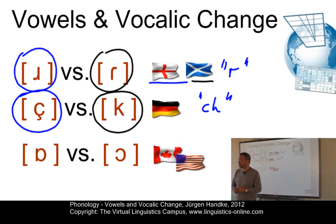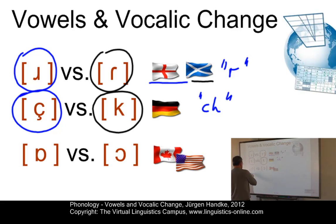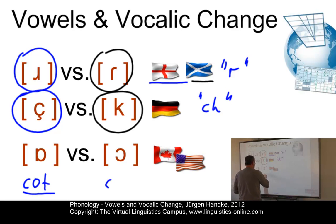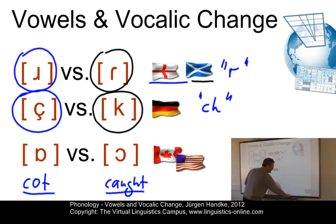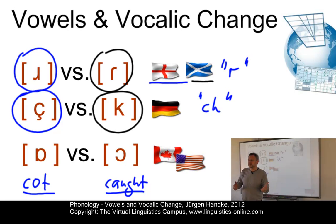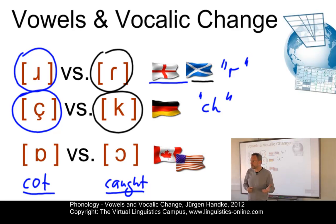Vocalic variation, by contrast, is gradual. Take the two low back vowels: [ɒ] as in British English 'cot' versus [ɔː] as in British English 'caught.' There is a clear-cut difference between them in RP. However, there are varieties where they have merged to become just one phoneme — in many parts of North America, for example in Canada or the west of the United States.